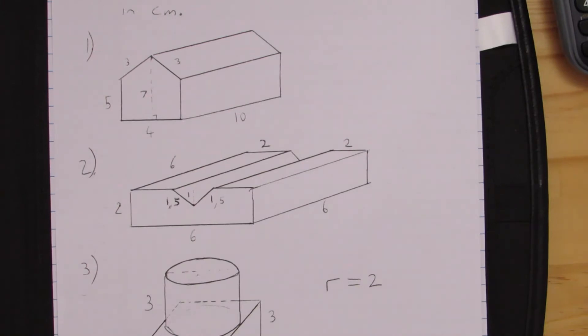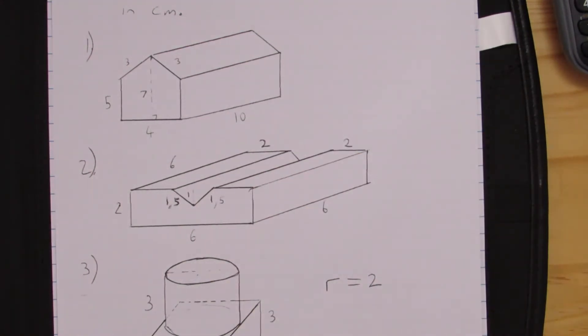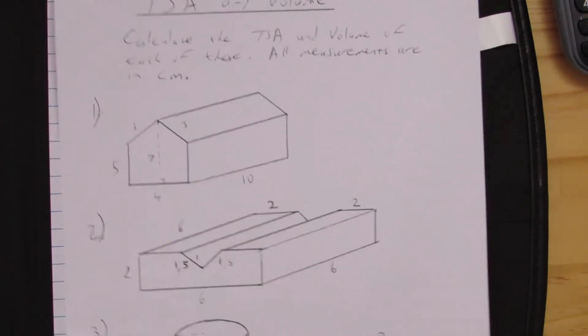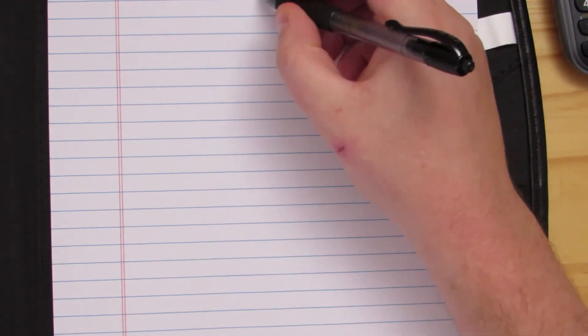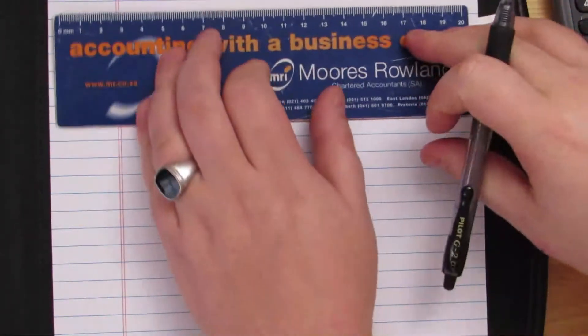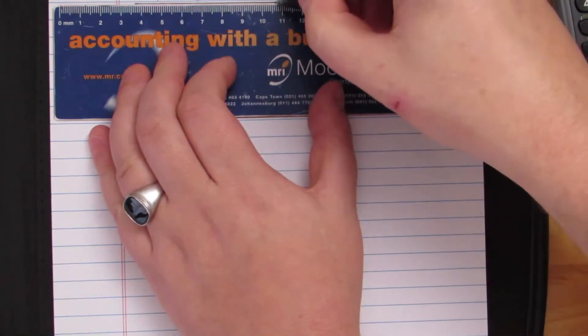Let's take a look at the very first one. We are looking at a house shape. We need to break these things up into pieces. This is TSA and volume — you always need to have your headings for these things.